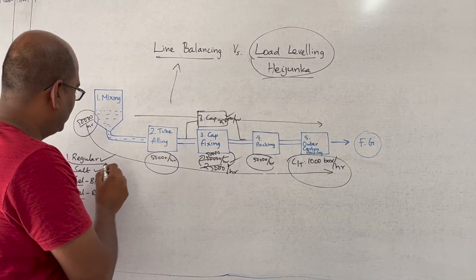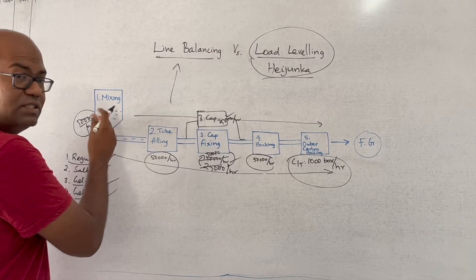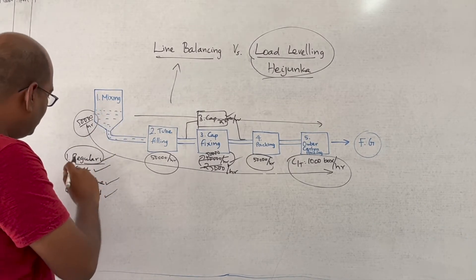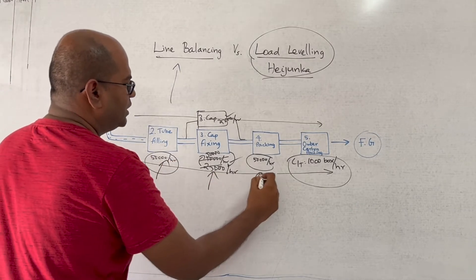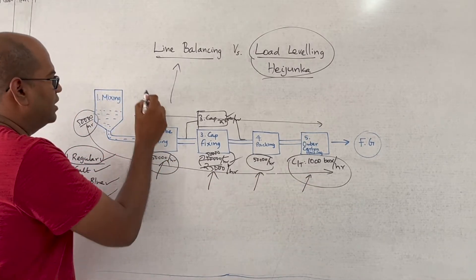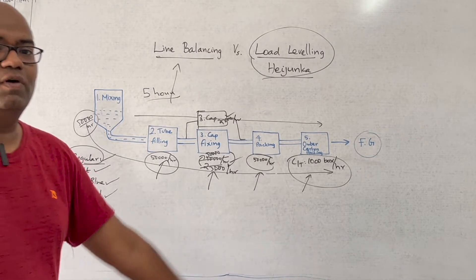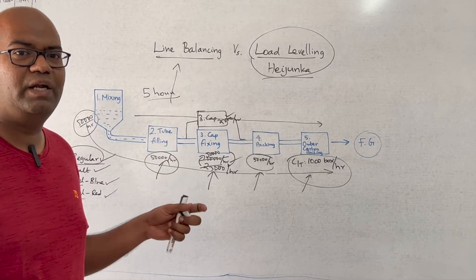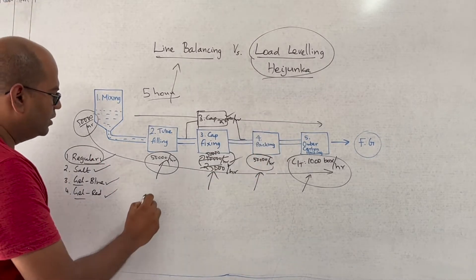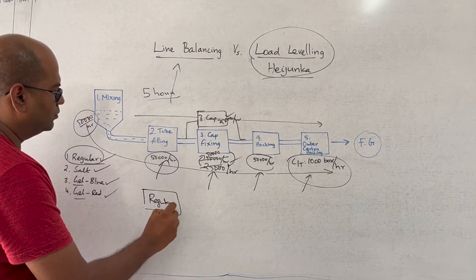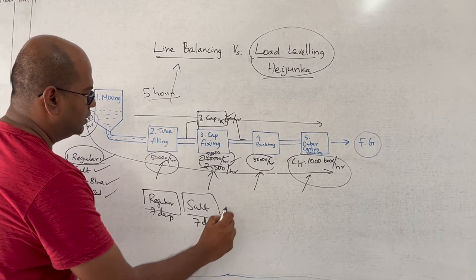So what will they do? For the first week they run regular toothpaste, then there is a changeover. Changeover means removing the chemicals used for the regular model, adding the new chemicals for salt, and changing over every machine. Let us say the changeover takes five hours. During these five hours there is no production. Because I am afraid to lose five hours of production, I will continuously run for one week — so the first week I produce only regular.